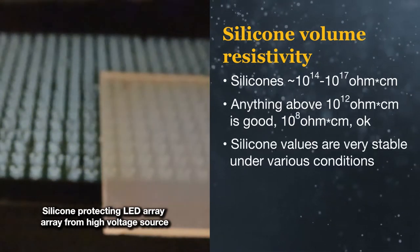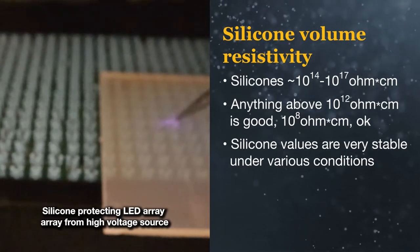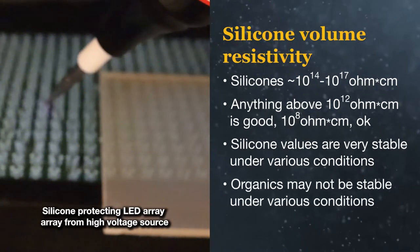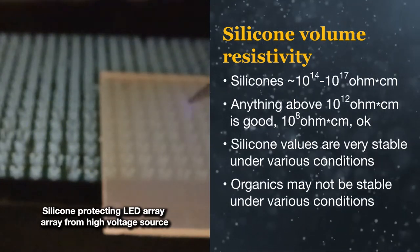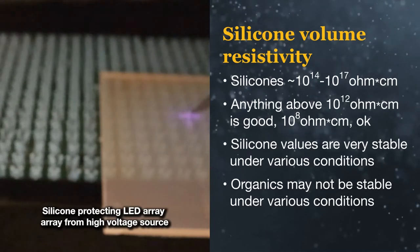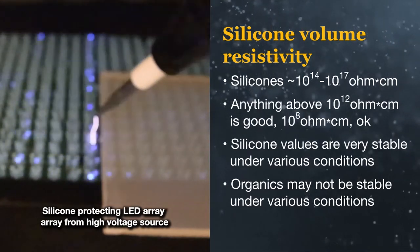In silicones, this property does not change significantly with humidity, water, or temperature exposure. This stability is far different than most other materials. The volume resistivity of polyurethanes, for example, drops with prolonged humidity exposure.